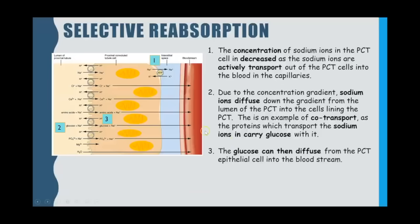The final step: there is now a high concentration of glucose within the PCT cell, and because this is higher than in the blood there is a concentration gradient, so glucose diffuses from the PCT cell into the bloodstream. That is how all of the glucose initially filtered out is reabsorbed. One important point: always say reabsorbed, not absorbed — absorbed means it's the first time something was taken in, whereas here it was already in the blood, was filtered out, and is being taken back in.